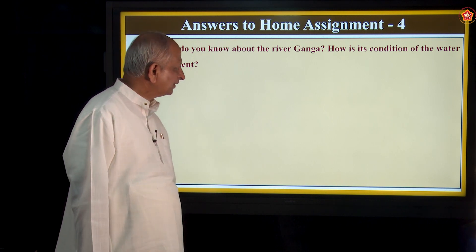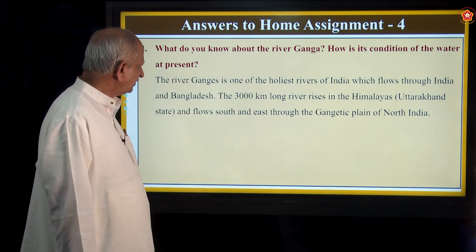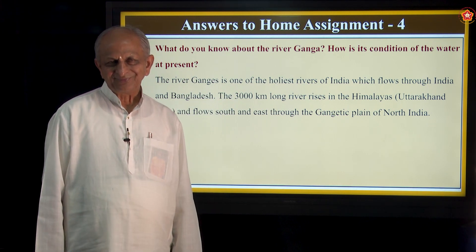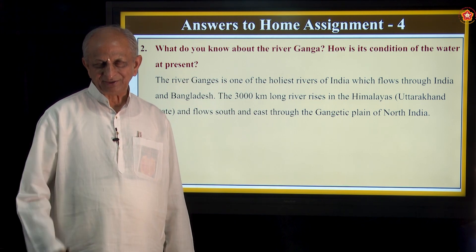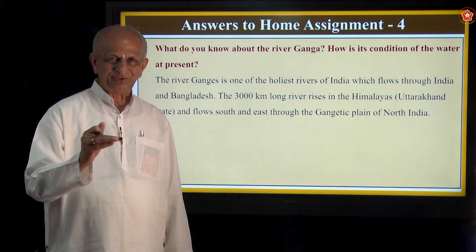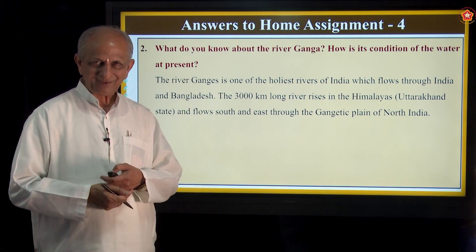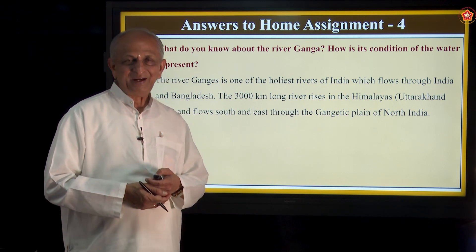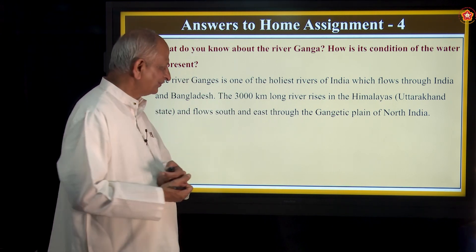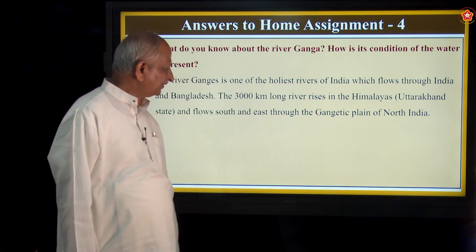Second question: What do you know about river Ganga, and how is its condition at present? The river Ganga is one of the holiest rivers of India, which flows through India and Bangladesh. Even though we take bath under a tap at home, we chant a mantra feeling that it is the Ganges and Yamuna — that is our culture. The 3000-kilometer-long river rises in the Himalayas, from a place called Gangotri, or Manasa Gangotri, as some say.